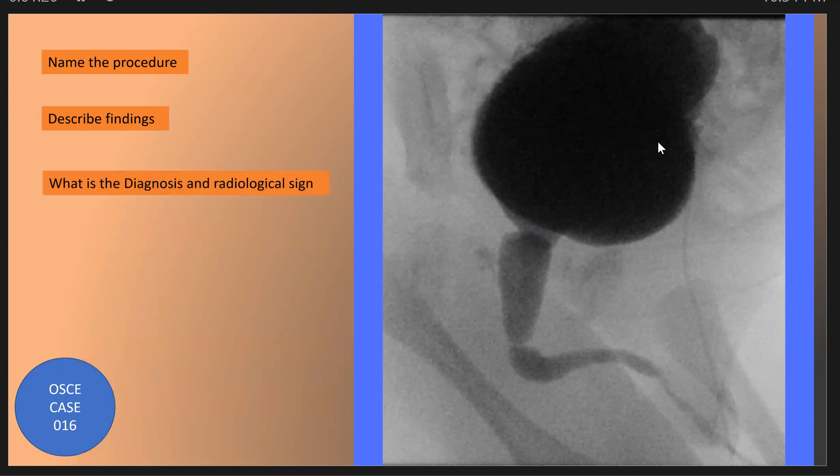What is the diagnosis and the radiological sign? The diagnosis is posterior urethral valve, and the radiological sign is the keyhole sign.